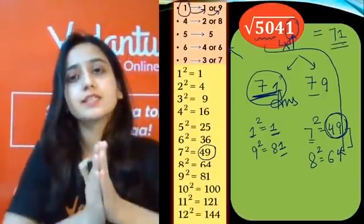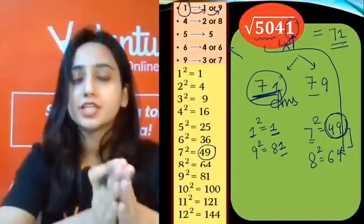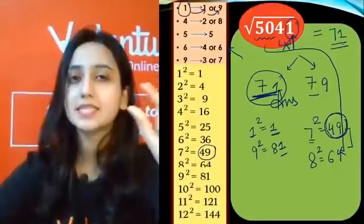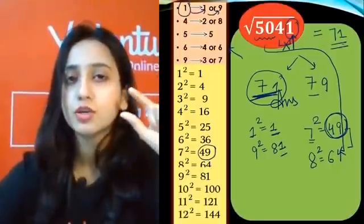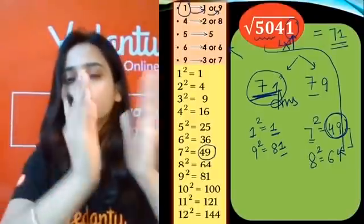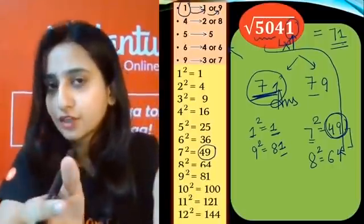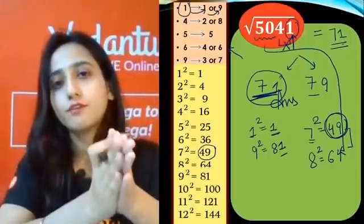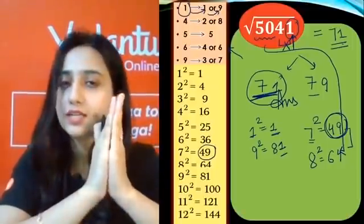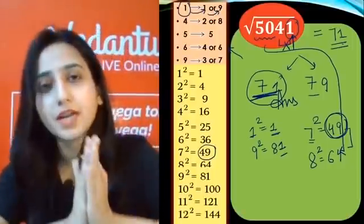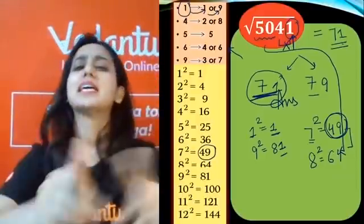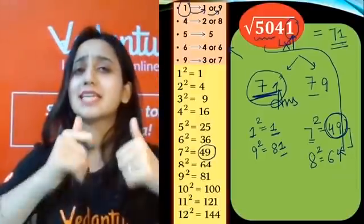Is it clear? We find the unit digits and create two possibilities. Then the tens digit tells us which to pick. We look at the remaining two-digit number — here it was 50 — and compare it to the nearby perfect squares: 49 or 64. Since 50 is nearest to 49, the smaller one, we pick 1 in the unit place. That gives 71.